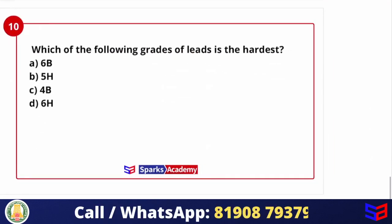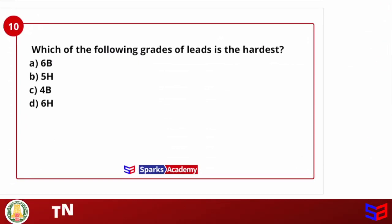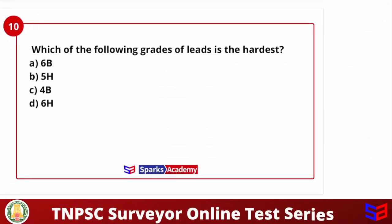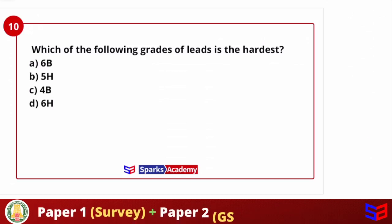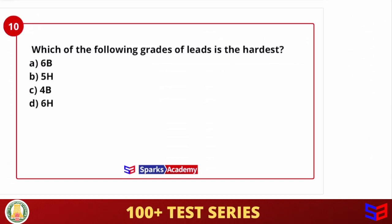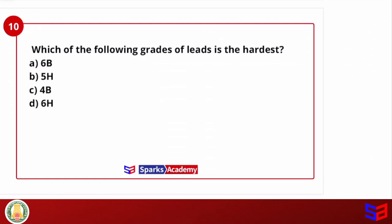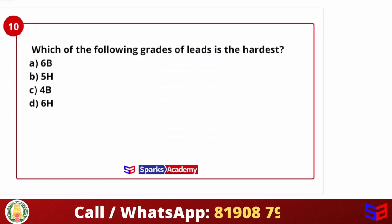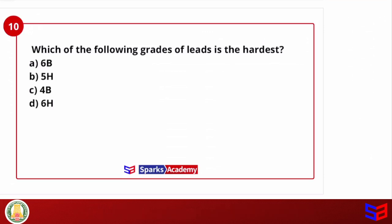Next question: which of the following grades of lead is the hardest? Options are 6B, 5H, 4B, and 6H. As already explained, H represents hardness and higher numbers mean harder. So 6H is harder than 5H. The correct answer is 6H. I will mention the correct answer in the comments section.